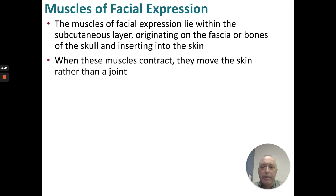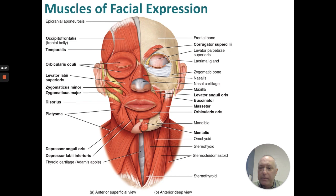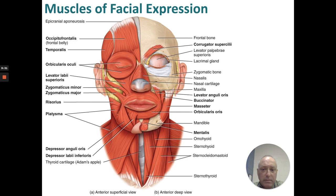Let's start with the muscles of facial expression. These muscles are a little different because they pull on the skin instead of on bones, so when they contract the skin moves rather than a joint. Muscles include: occipitofrontalis, temporalis, orbicularis oculi, levator labii superioris, zygomaticus minor and major, risorius, platysma, depressor anguli oris, depressor labii inferioris. A little bit deeper: the buccinator, masseter, orbicularis oris, mentalis, and the corrugator supercilii.